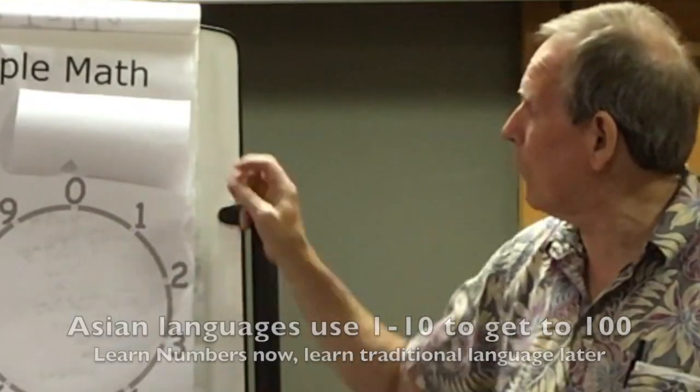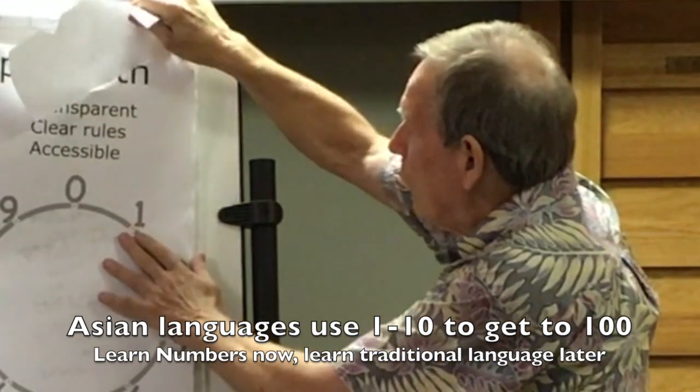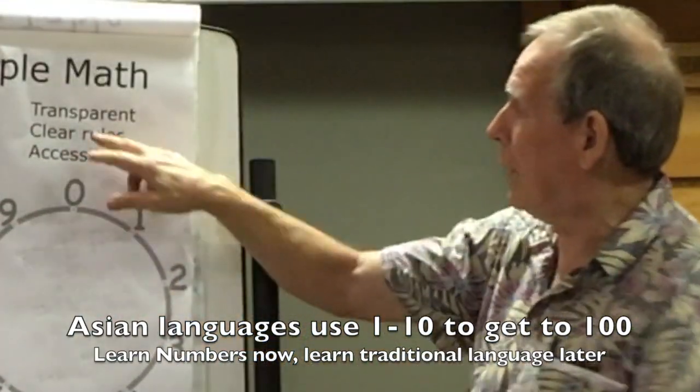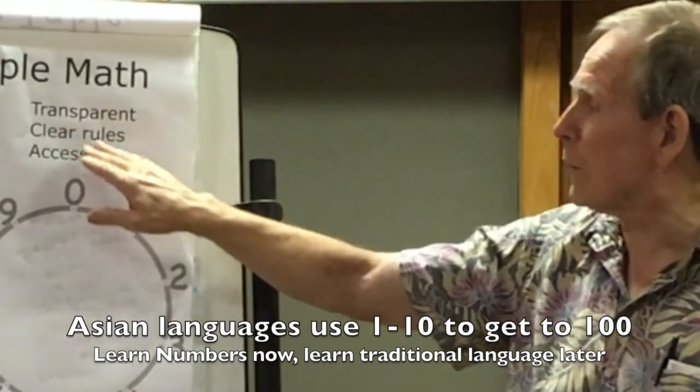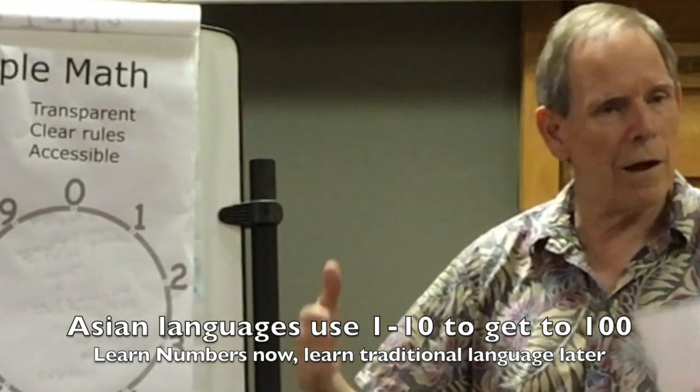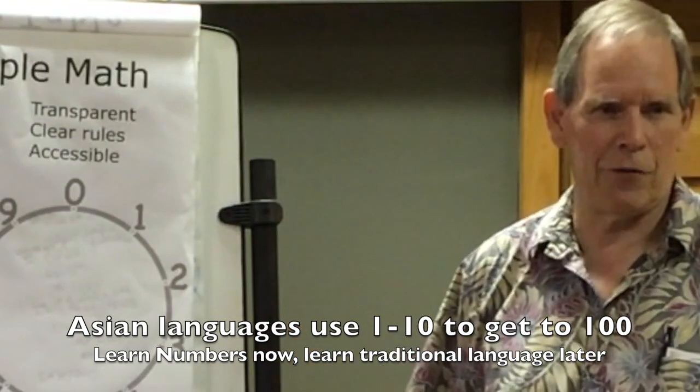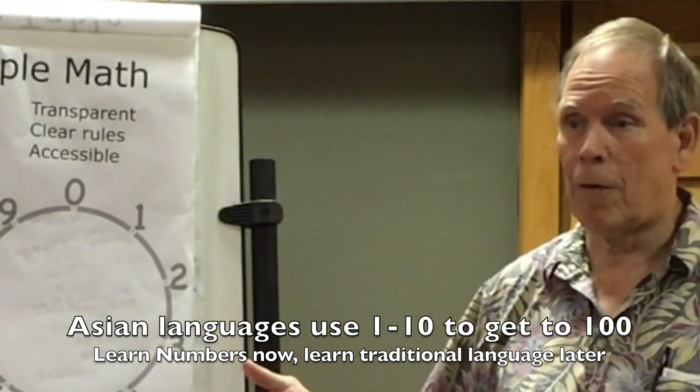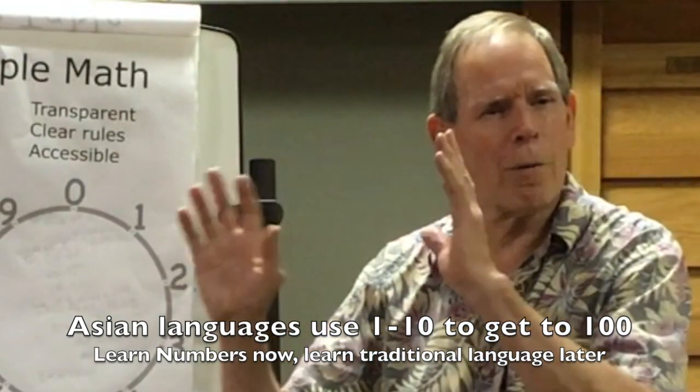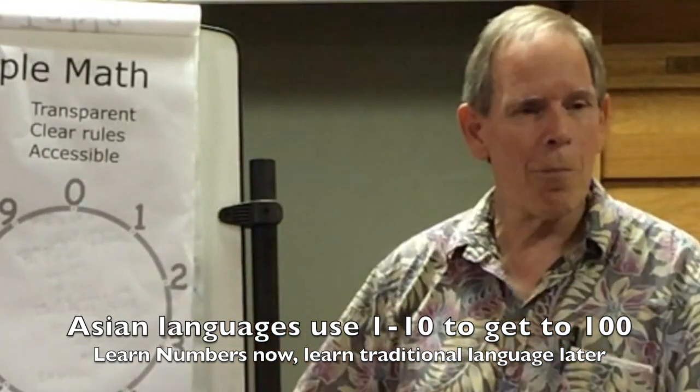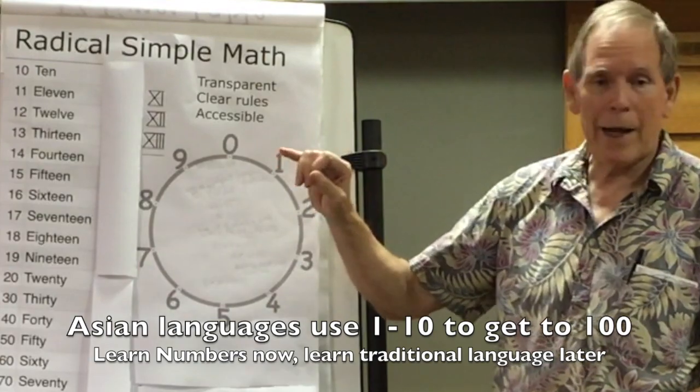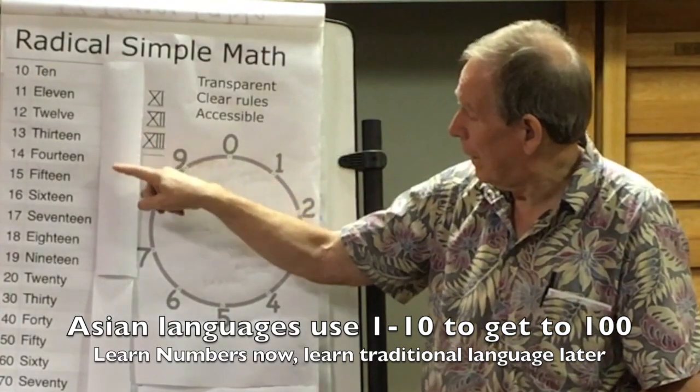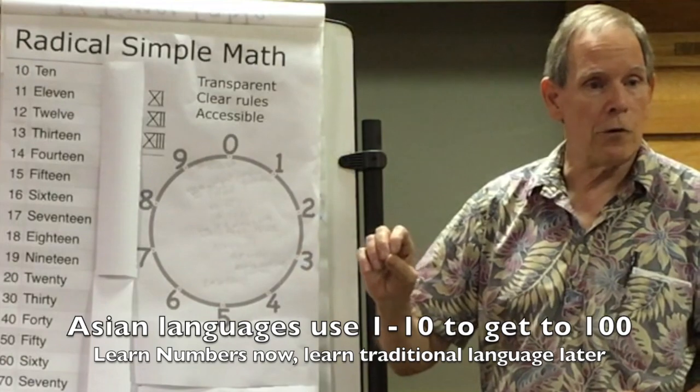A lot of it is language. What happens is what we want language to be is transparent, have clear rules, and be accessible. Easy to understand and make sense to us for doing it. We don't have that with our modern language right now for math. It's used from way back. It's a throwback. And we can actually use the same system that the Asians use.